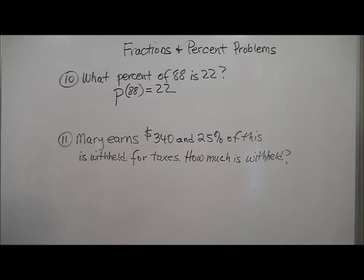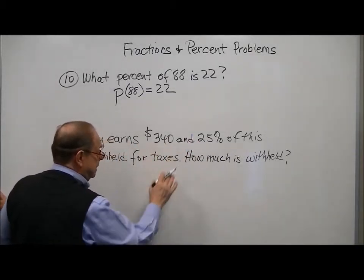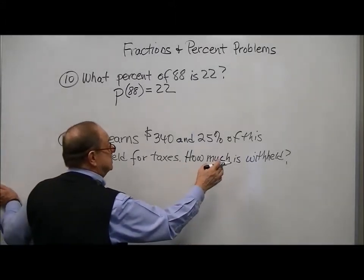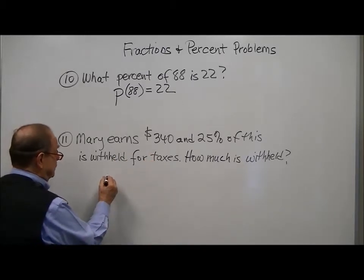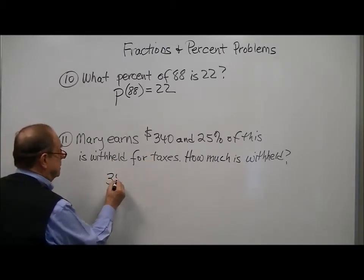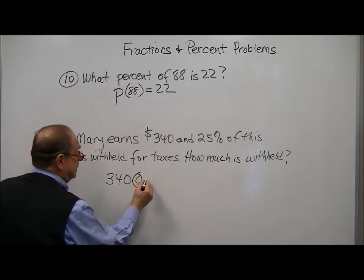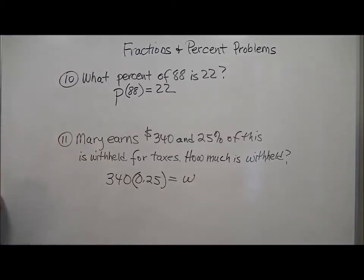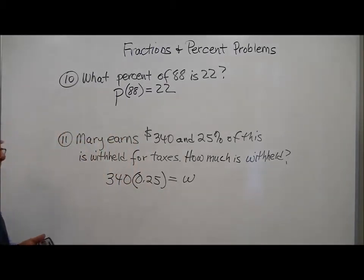You're going to solve it for p. Here, Mary earns $340 a week, and 25% of this is withheld for taxes and Social Security and other things. So how much is withheld? Well, this is straightforward. So 340 times 25%, you could have put it in the front or here is okay, is the amount withheld. These are simple, but the idea of setting it up in an equation I think is very useful.